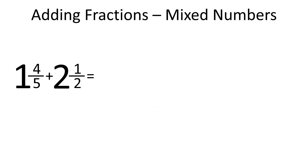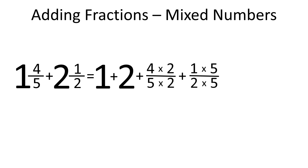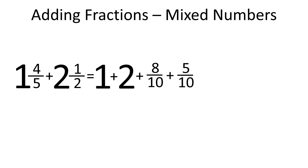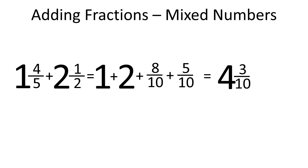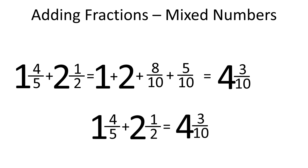Let's repeat what we did. First we added the whole parts, then we found a common denominator of 10. We represented 4 fifths and 1 second as equivalent fractions with a common denominator of 10 by multiplying numerator and denominator of 4 fifths by 2 and of 1 second by 5. Next we added 8 tenths and 5 tenths: 13 over 10 equals 1 and 3 tenths. So 3 plus 1 and 3 tenths is 4 and 3 tenths. It means 1 and 4 fifths plus 2 and 1 second is equal to 4 and 3 tenths.